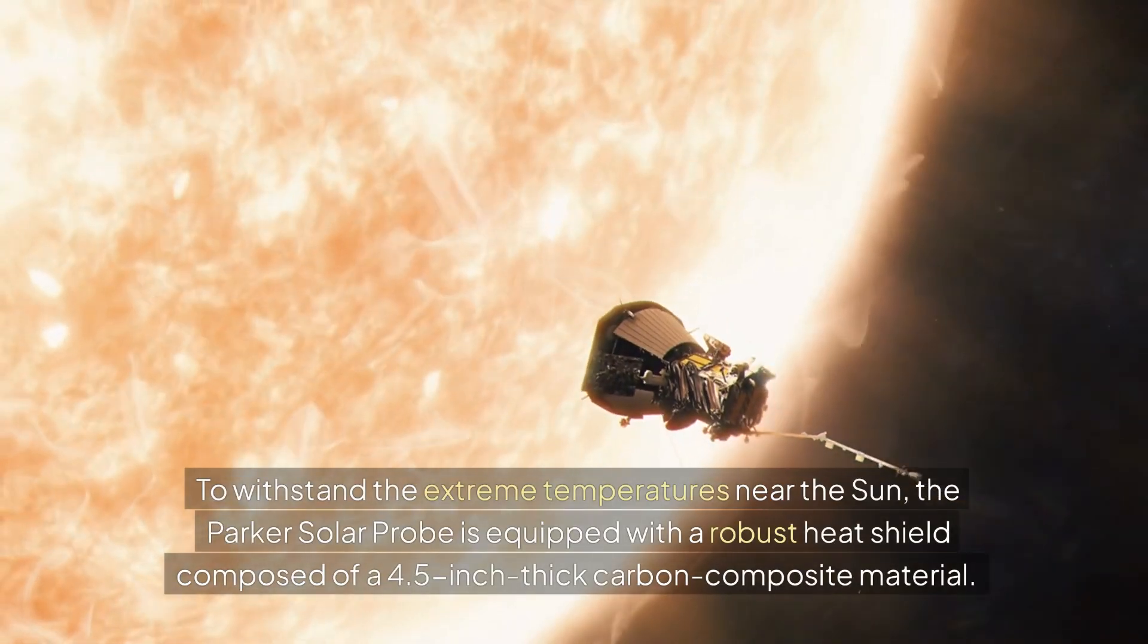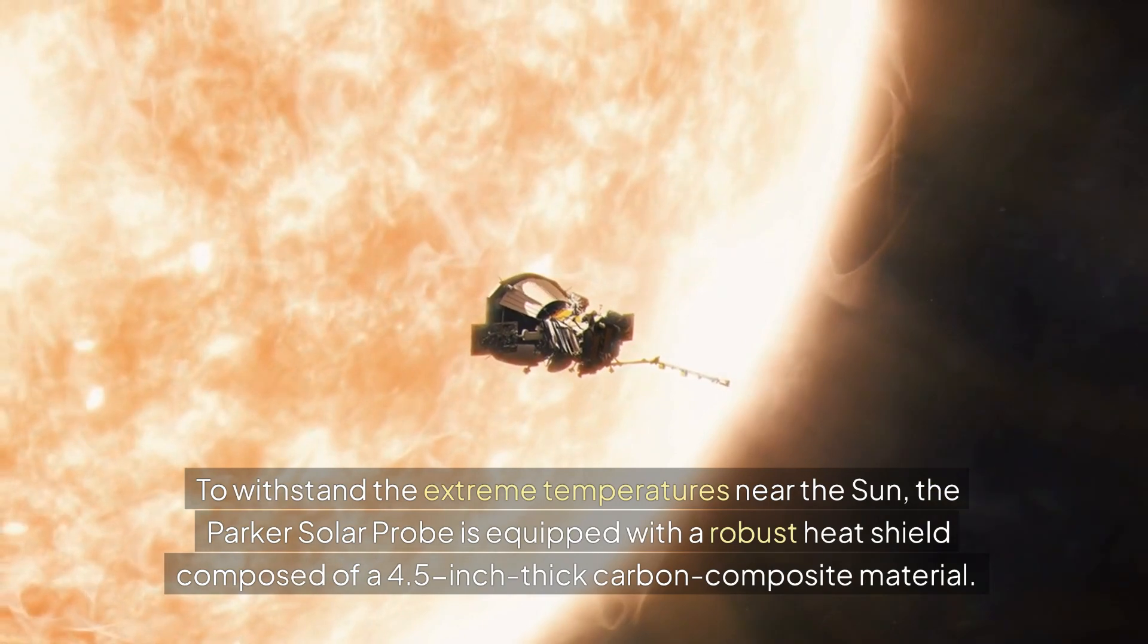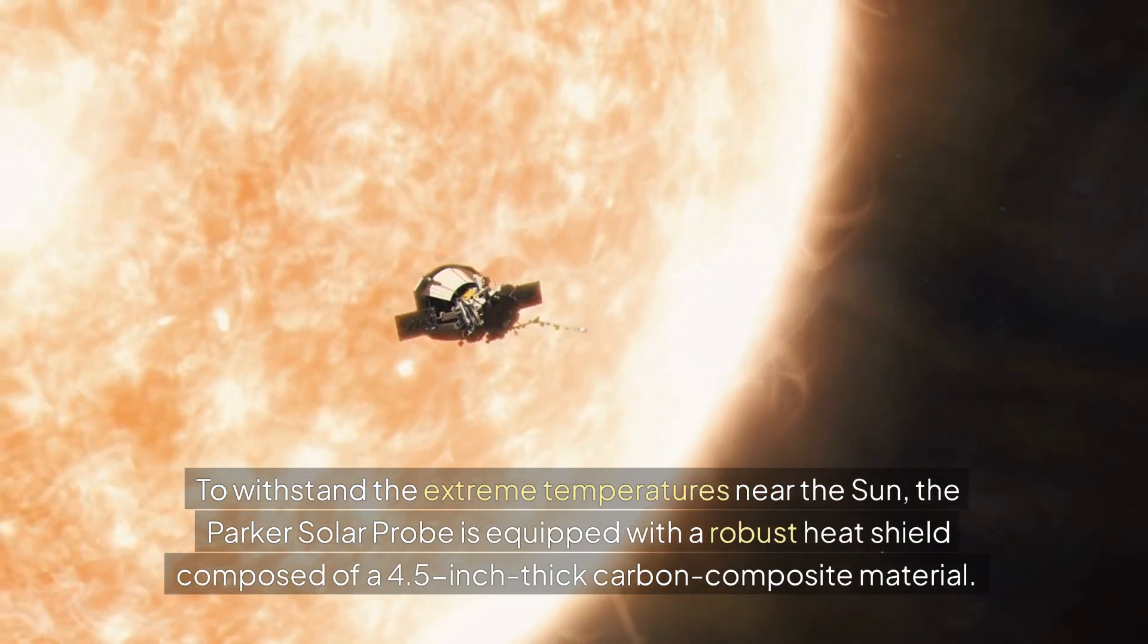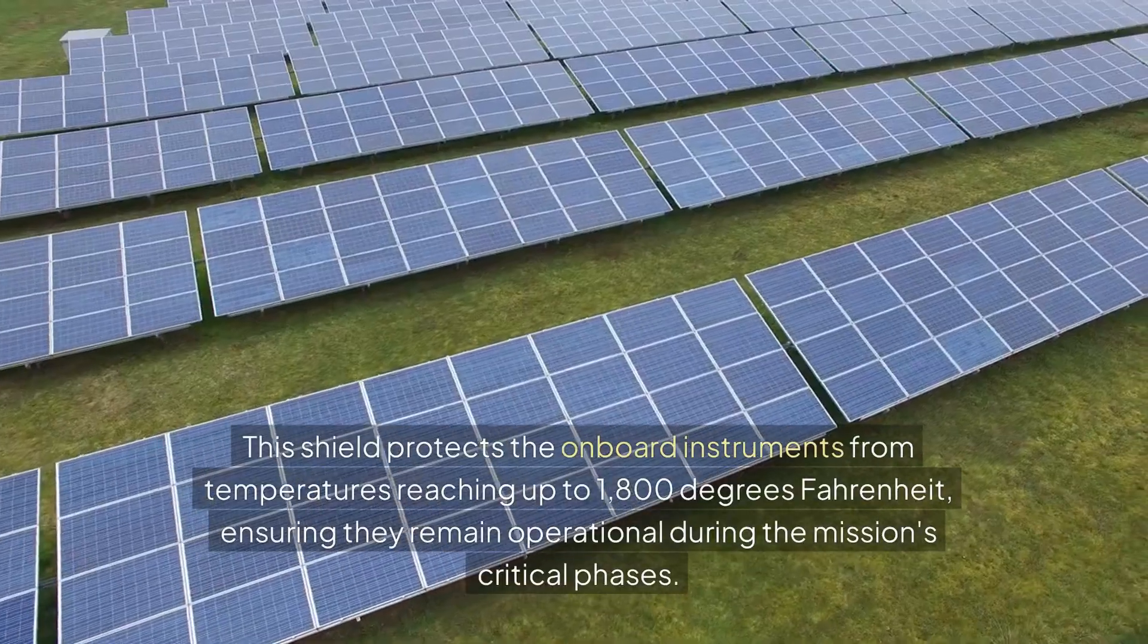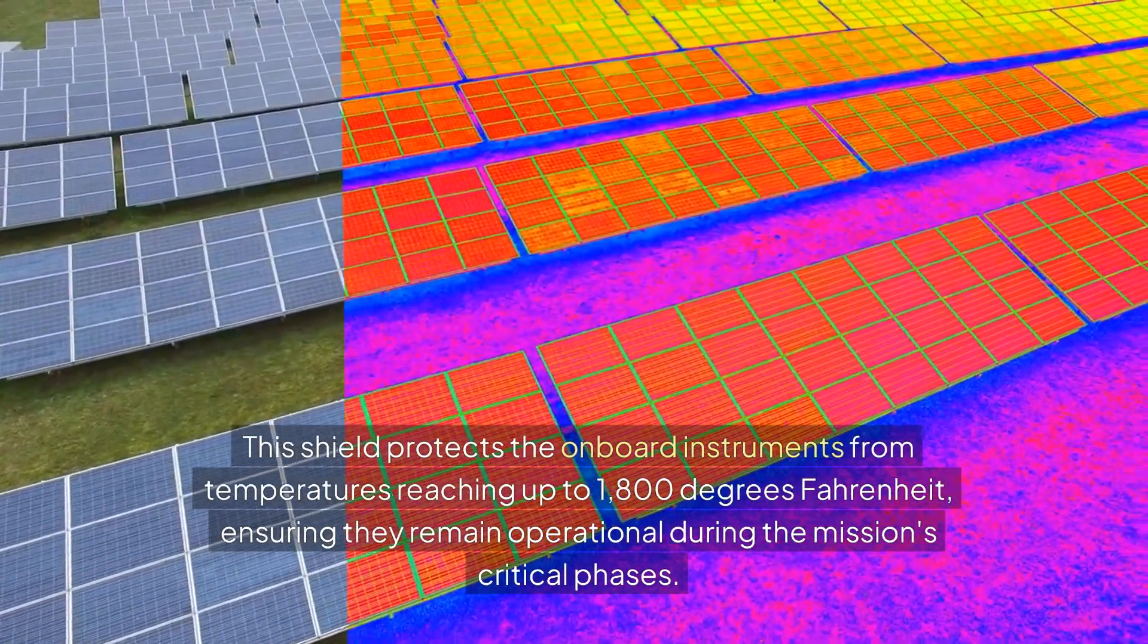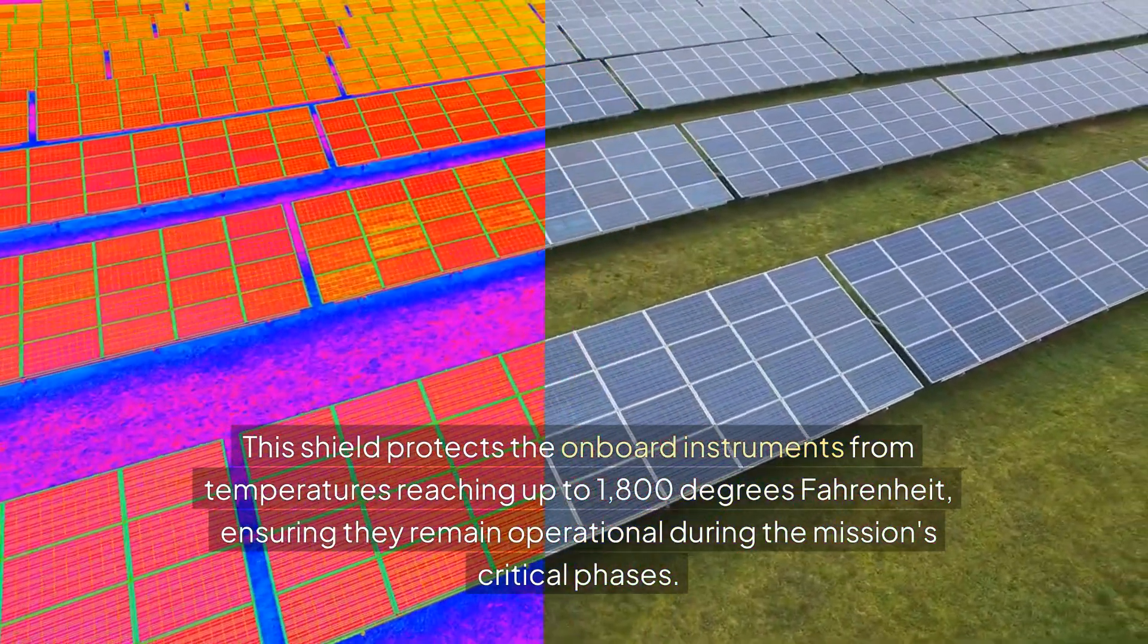To withstand the extreme temperatures near the sun, the Parker Solar Probe is equipped with a robust heat shield composed of a 4.5-inch thick carbon composite material. This shield protects the onboard instruments from temperatures reaching up to 1,800 degrees Fahrenheit, ensuring they remain operational during the mission's critical phases.